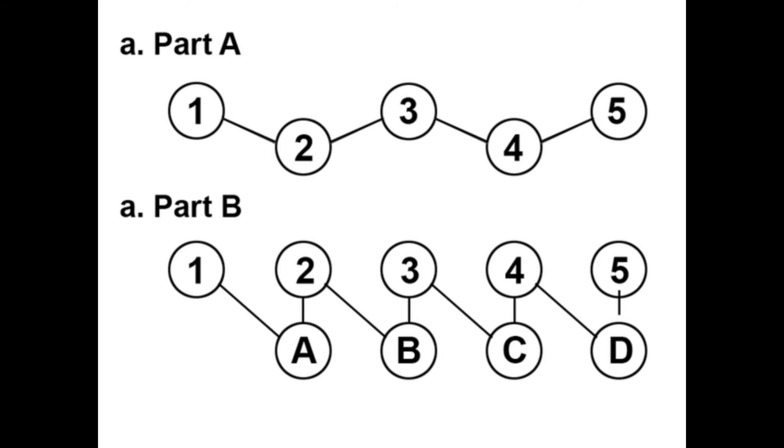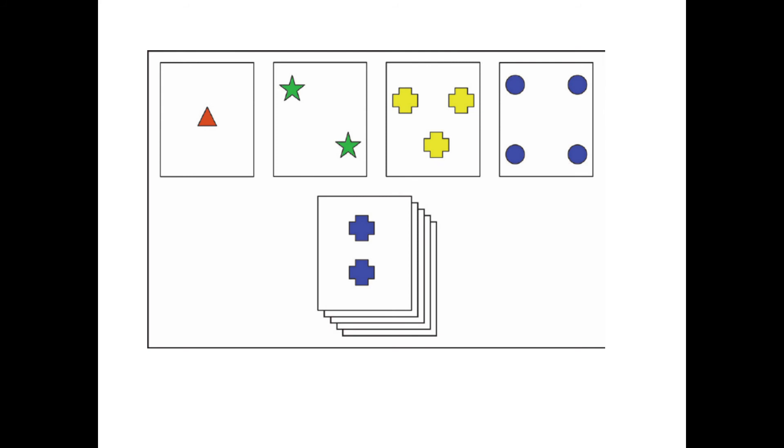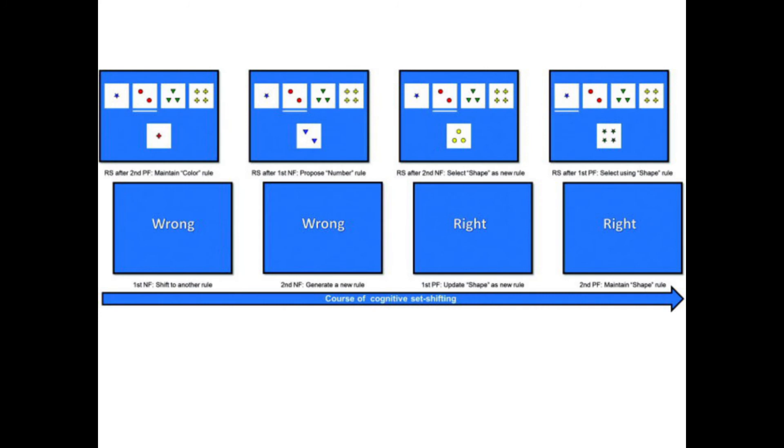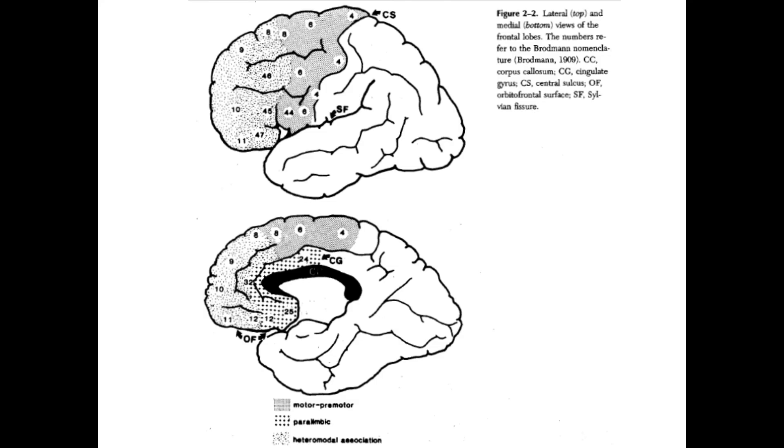And part B, you have to alternate between numbers and letters from the alphabet. This is another test I recommend you to read, it's called Wisconsin Card Sorting Test, and it is a very good test to measure some frontal lobe syndromes as well.